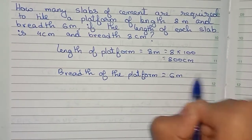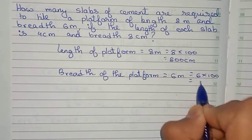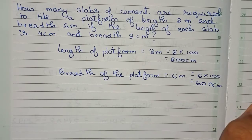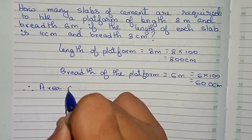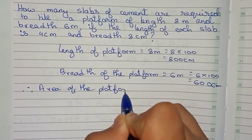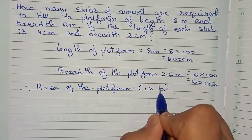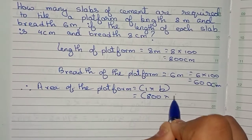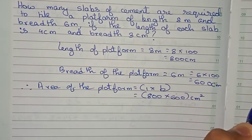The breadth of the platform is equal to 6 meters. Converting into centimeters: 6 into 100, that is equal to 600 centimeters. Therefore, the area of the platform is equal to 800 × 600 centimeter square.